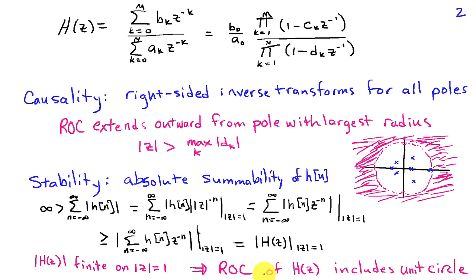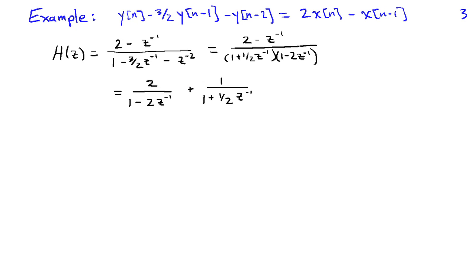So now we have ROC information for our system function H of Z if we want it to be causal and stable. If we want causality, the ROC has to extend outward from the pole of largest radius. If we want stability, the ROC has to include the unit circle.